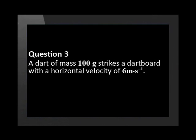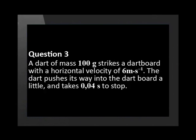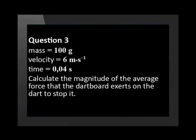A dart of mass 100 g strikes a dartboard with a horizontal velocity of 6 m per second. The dart pushes its way into the dartboard a little. It takes 0.04 seconds to stop. Calculate the magnitude of the average force that the dartboard exerts on the dart to stop it.